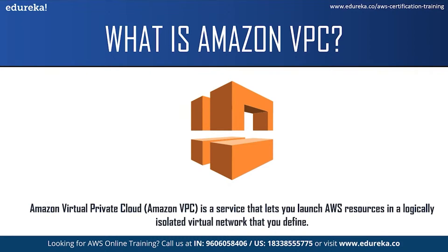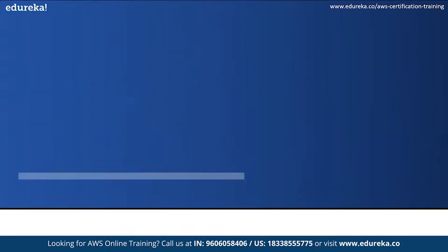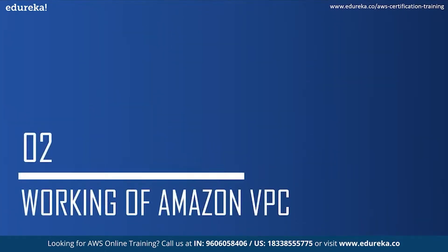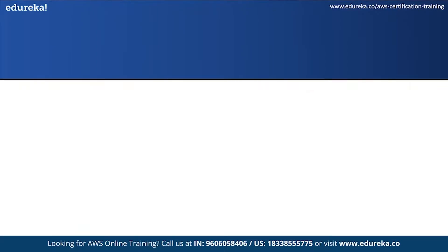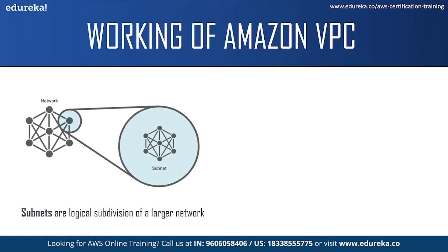Now that you have some idea about what exactly is AWS VPC, let us move on to our next topic and see how it works. Before we get into the working part, I would like to explain some terms. Subnets are logical subdivisions of a larger network. You can launch your AWS resources such as EC2 instances into a specified subnet. There are two types of subnets: public and private. You use a public subnet for resources that must be connected to the internet, and with the private subnet, the resources won't be connected to the internet.